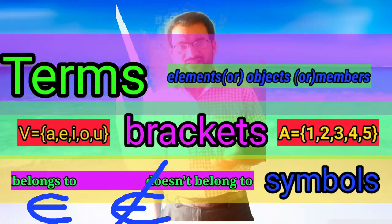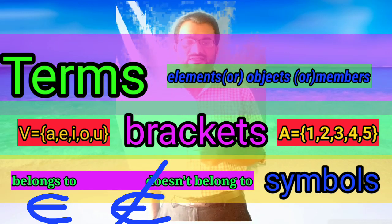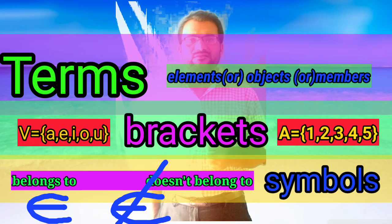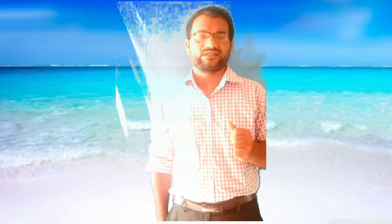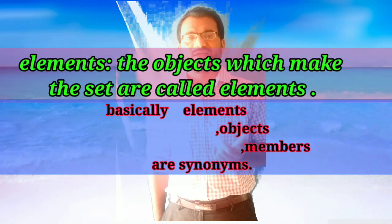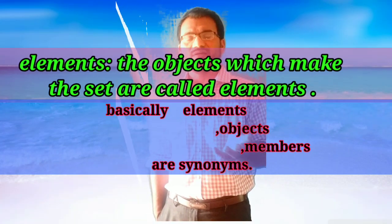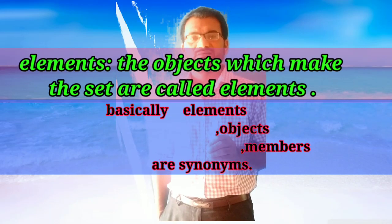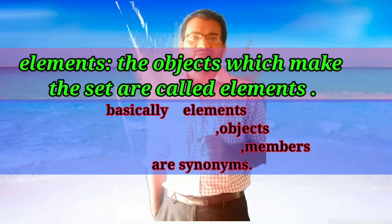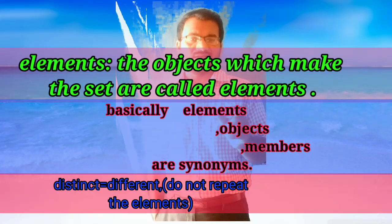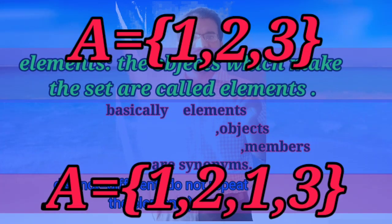Let us discuss the terms, brackets, symbols, and elements that we use to prepare a set. The objects which make up a set are called elements. In another way, the objects present in the set are called elements. We have to remember that the elements of a set are distinct — that means they do not repeat.